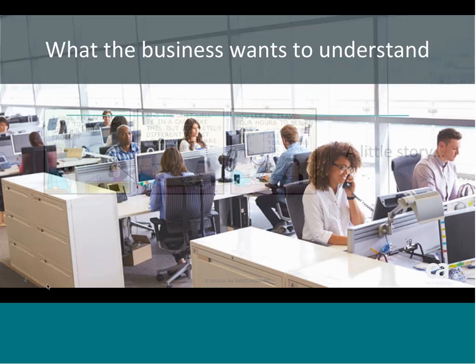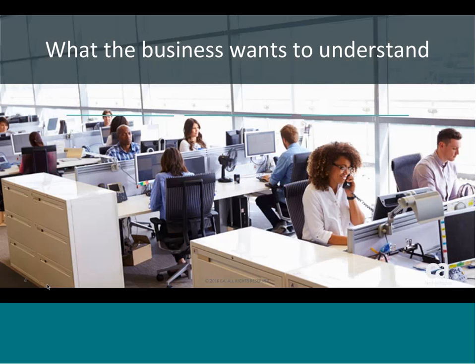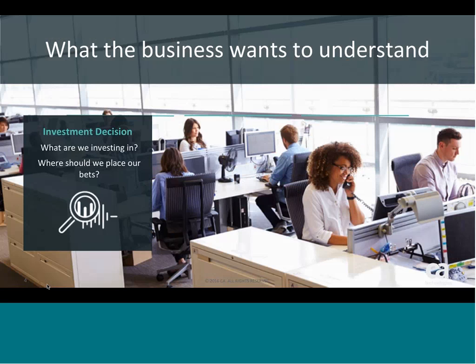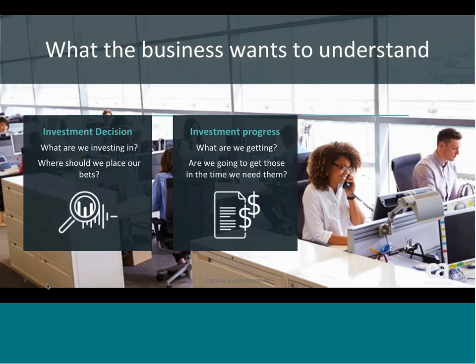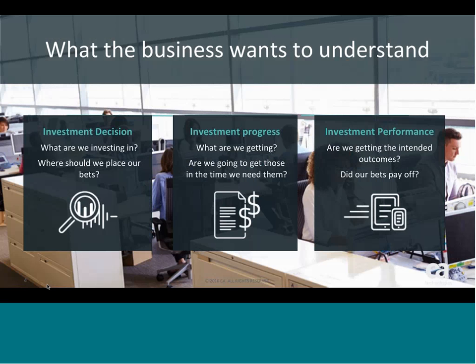He was very supportive of what teams were doing from an Agile transformation perspective, but at the end of the day he was concerned about three things. First, investments — he gave money and people to build the digital platform, and wanted to know where they stood. Second, delivery — are the teams delivering? Are we going to deliver on time and within budget? And third, outcomes — are we going to hit the targets and achieve the anticipated outcomes?